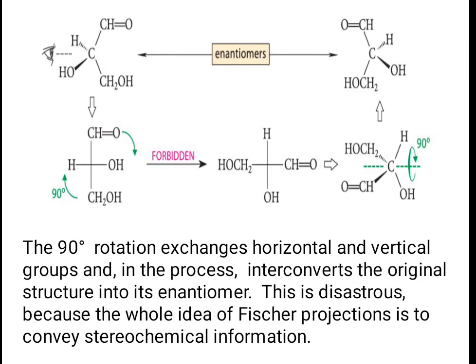If we have a single asymmetric carbon and rotate its Fisher projection 90 degrees in the plane of the page, we actually get the enantiomer of the original molecule. The 90-degree rotation exchanges horizontal and vertical groups and in the process interconverts the original structure into its enantiomer. This is disastrous because the whole purpose of Fisher projections is to convey stereochemical information.